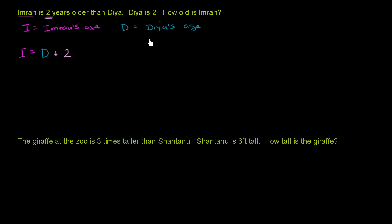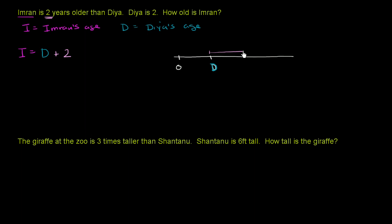Another way you could think about it: if we were to imagine their ages on a number line, this is zero and then this is Diyah's age right over here. If you were to add two to Diyah's age — go two more — you would get to Imran's age. So that's what this first sentence tells us.